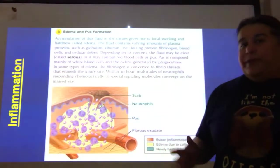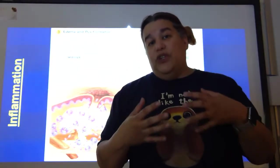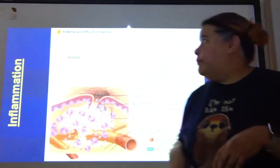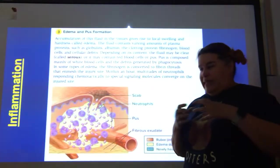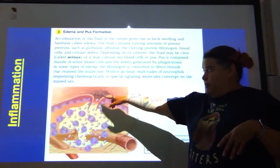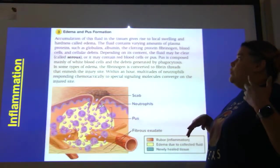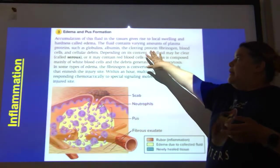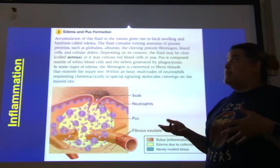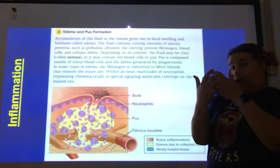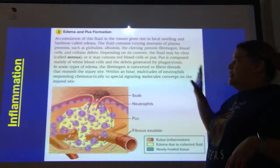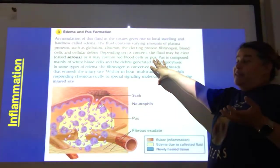Third step — edema and pus formation. Edema just means swelling. If all of this fluid is leaking, it will eventually puff up the damaged area. If you look at the picture, all the yellow is fluid that has collected and the flesh is puffy. Chemicals are released such as plasma proteins like globulins and albumin, even the clotting protein fibrinogen. Fibrinogen is water soluble, but if converted into fibrin it forms a clot. If the fluid is clear it's serous fluid, but if it contains red blood cells, neutrophils, and bacteria, we call it pus.